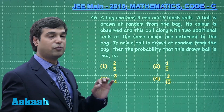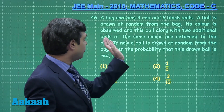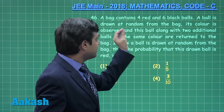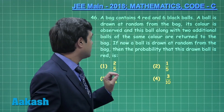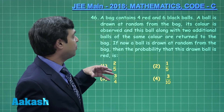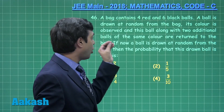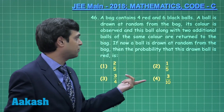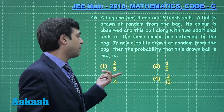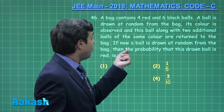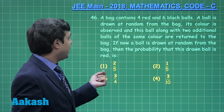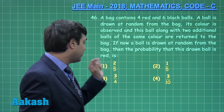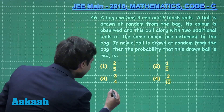Let us consider question number 46, a question from probability. A bag contains four red and six black balls. A ball is drawn at random from the bag, its color is observed, and this ball along with two additional balls of the same color are returned to the bag. If now a ball is drawn at random from the bag, find the probability that the ball drawn is red.